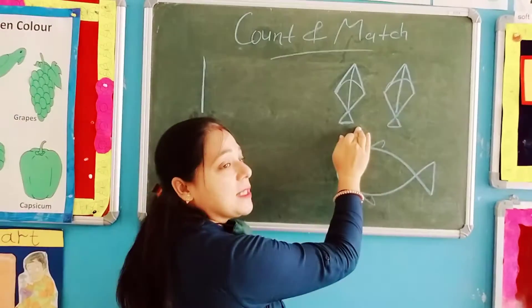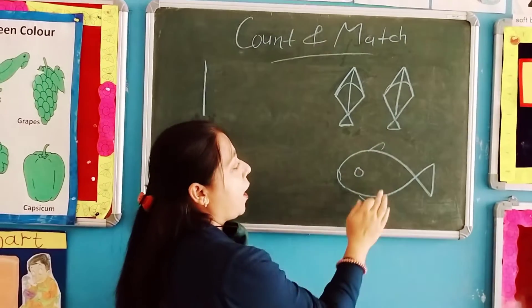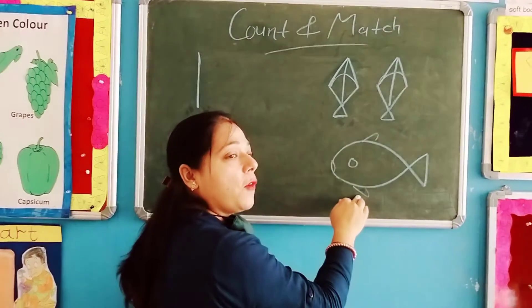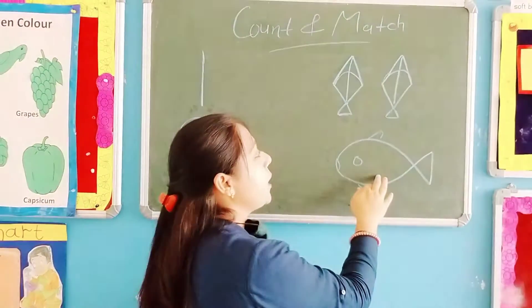What are these? These kya hai? Kites. And what is this? This is a fish.